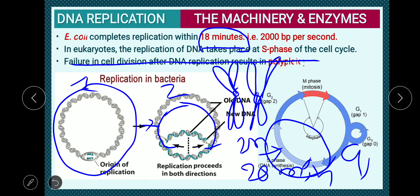Failure in cell division after DNA replication results in polyploidy. We have studied about polyploidy in the principles of inheritance and variation in chromosomal disorders. If cytokinesis is not followed, or karyokinesis is not followed by cytokinesis, the result is polyploidy.